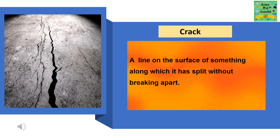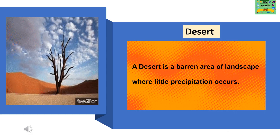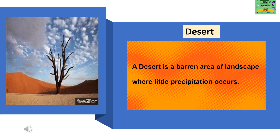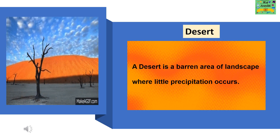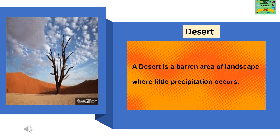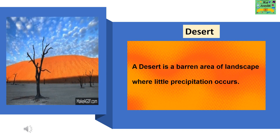Crack: a line on the surface of something along which it has split without breaking apart. Observe: to notice or perceive something and register it as being significant. Desert: a barren area of landscape where little precipitation occurs.